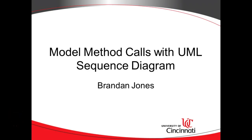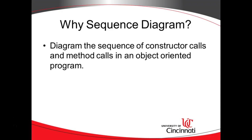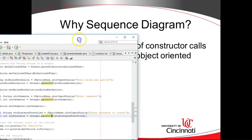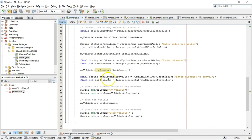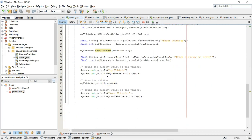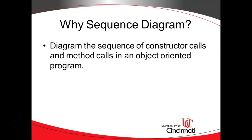In this video we're going to see how to model method calls in the Java programming language with the UML sequence diagram. Why do we want a sequence diagram? If we take a look at a program we'll see a whole bunch of method calls and constructor calls, and as our program gets longer and longer it can be difficult to track what exactly is going on. Many times we want to plan out these method calls in advance, and this is where the sequence diagram comes into play.